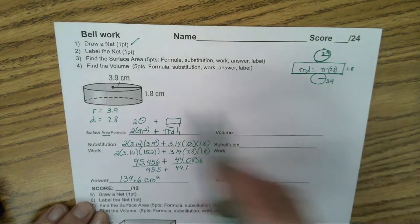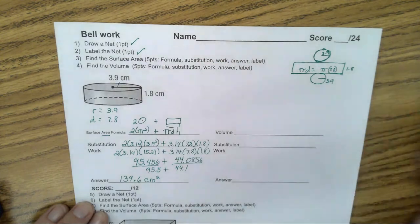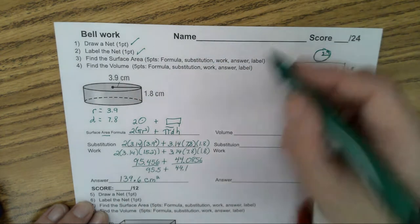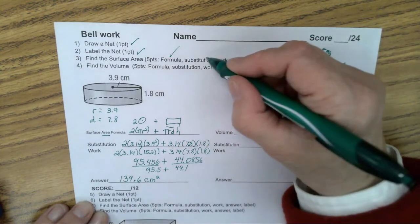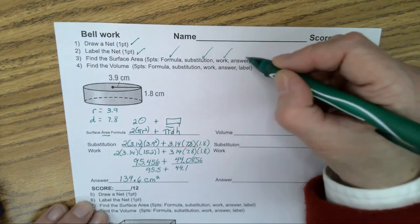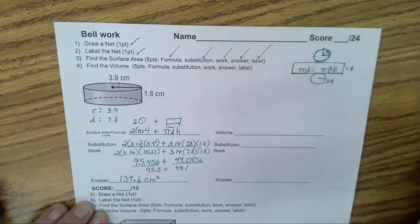Did you draw a net? One point. Did you label it correctly? Another point. Did you put in your surface area formulas? Did you do your substitutions? Did you show work? Do you have an answer with a label?